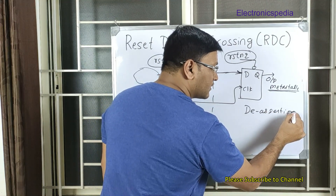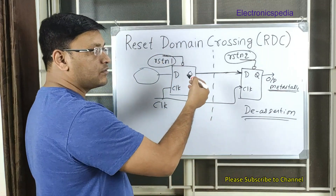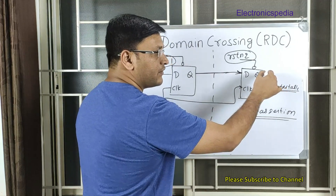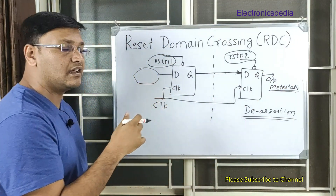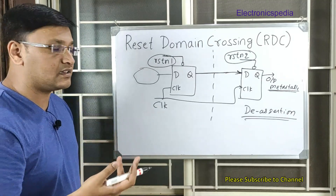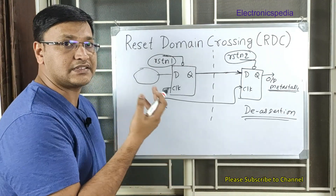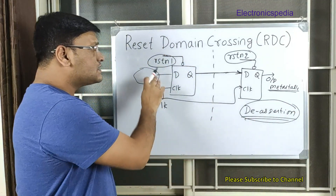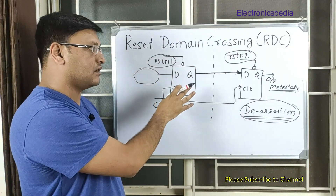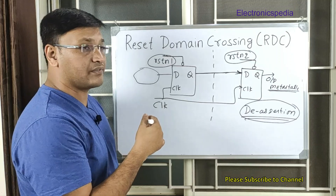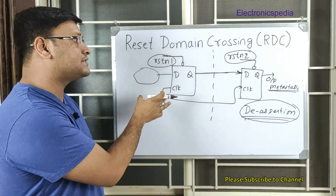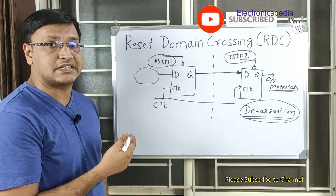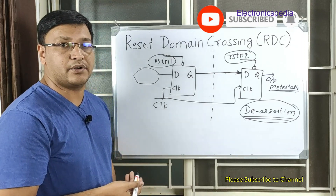De-assertion of the reset causes the problem. When the reset is asserted, we don't care because the output will be a stable, known value due to the asynchronous reset. But de-assertion can corrupt data. This is the basic concept of reset domain crossing. I'll cover techniques to handle reset domain crossing in my next video. Please leave any queries in the comments — I'll be happy to help. Thank you.